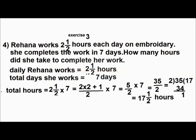Rahana works 2 and a half hours each day on embroidery. She completes the work in 7 days. How many hours did she take to complete her work? Daily, Rahana works for 2 and a half hours, and total days she works is 7. Calculate the total hours: 2 and a half into 7. Convert the mixed fraction into improper fraction: that is 5 by 2 into 7, which is 35 by 2. Dividing 35 by 2, that is 17 and a half hours.